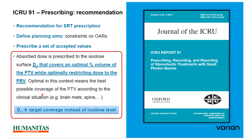Recommendations for SRT prescription include: define planning aim, define constraints on OARs, and describe a set of accepted values. Absorbed dose is prescribed to the isodose surface that covers an optimal volume of the PTV while optimally restricting dose to the PRV. Optimal here means the best possible coverage of the PTV according to the clinical situation — for example, brain, spine.